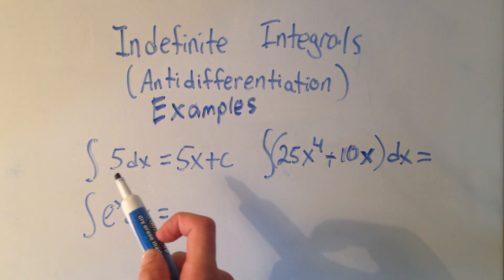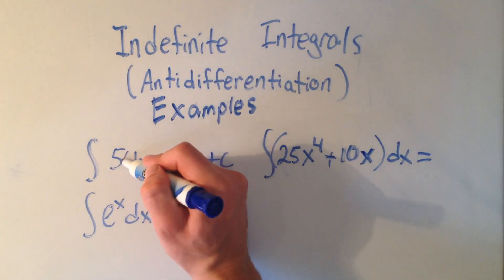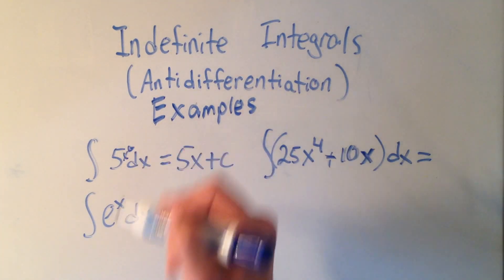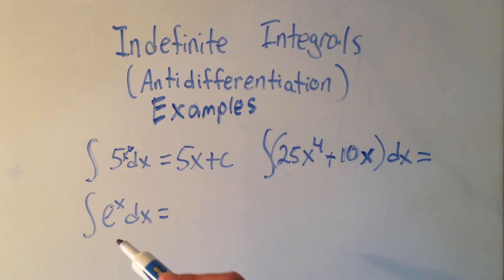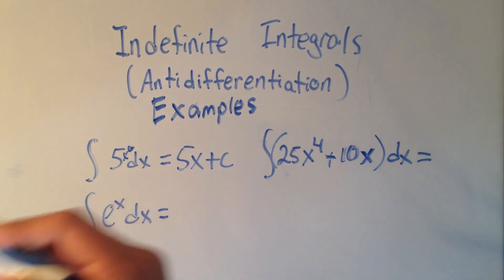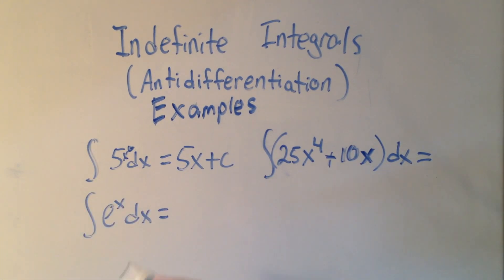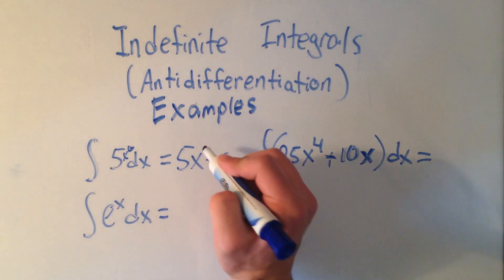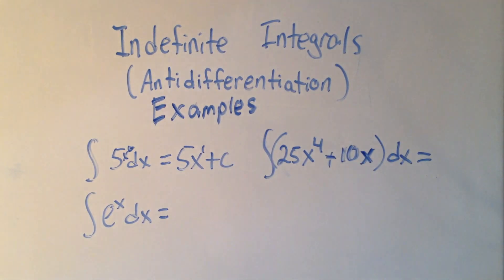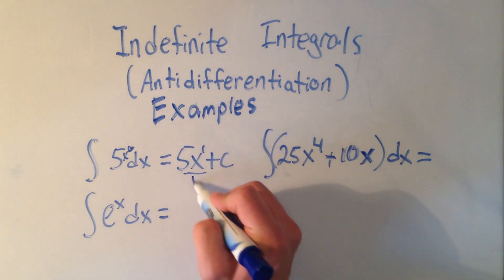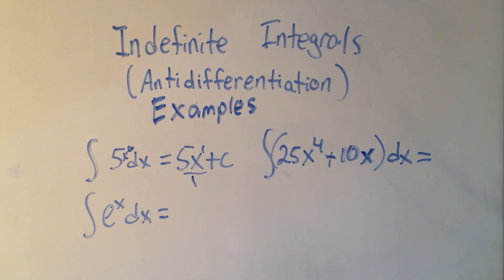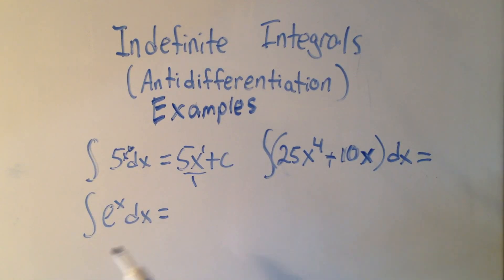Or you could think about there being an x to the 0 there. And then if you added 1 to the power and divided by the new power of x, you would get 5x to the 1st over 1, if you'd like to think about it that way. Either way, let's move on.